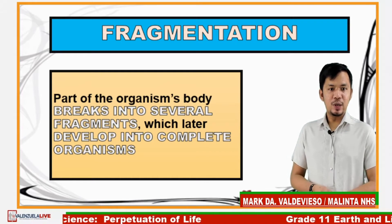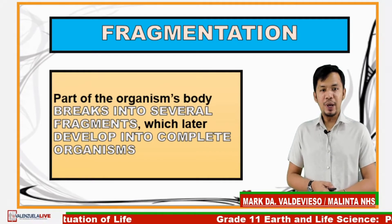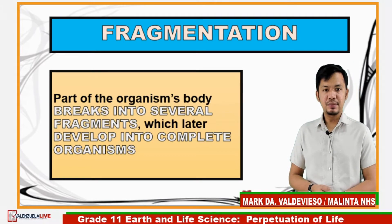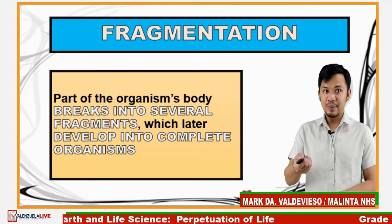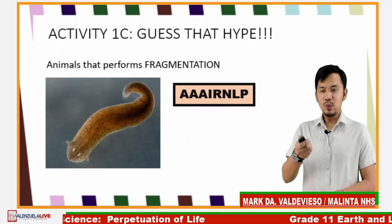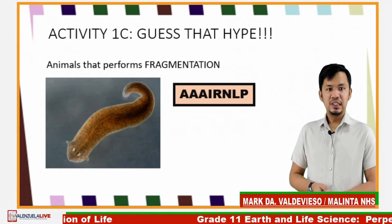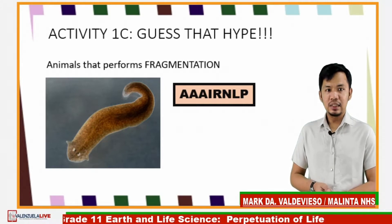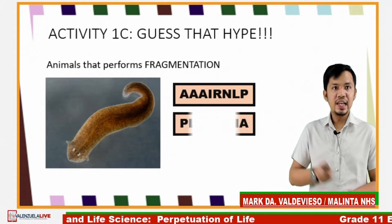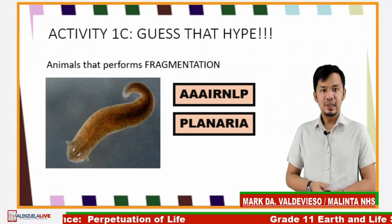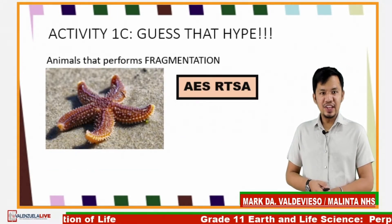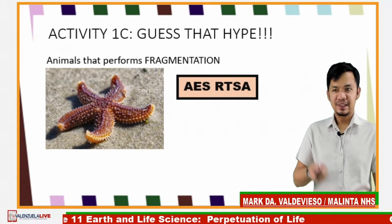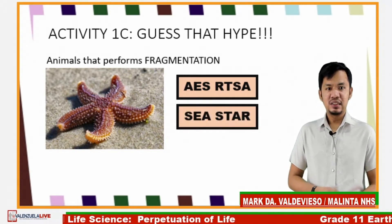The last type of asexual reproduction in animals is fragmentation. Part of the organism's body breaks into several fragments which later develop into a complete organism. In our Guess That Hype activity — can you guess these animals? Correct — it's planaria, which cuts into half and both parts regenerate into a new animal. And that's sea star — Spongebob's best friend.